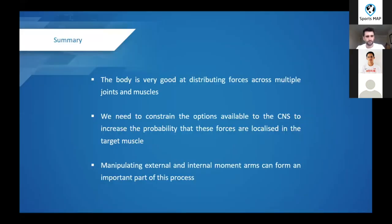So in summary, the body is very good at distributing forces across multiple joints and muscles. That's well described from the problem of redundancy that we spoke about earlier on. And we need to constrain the options available to the nervous system. So we increase the probability and the likelihood that the forces in the exercise are localized to the target muscle. And manipulating external and internal moment arms can form an important part of this process.